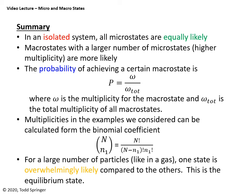So let me try to summarize this lecture. In an isolated system, all microstates are equally likely. So we're familiar now with the terminology of microstates, macrostates and multiplicity. All the microstates are equally likely. That's an assumption. But the macrostates are not equally likely because macrostates that can be achieved with a larger number of microstates or a different number of ways, higher multiplicity, are more likely. The probability of achieving a certain macrostate is the multiplicity of that macrostate omega divided by the total multiplicity. In the examples we did where something could be either on the left or on the right, you could calculate these multiplicities using the binomial coefficient, so using these factorials. And then the claim, the amazing claim, is that if you have a large number of particles like in a gas, 10 to the 23 particles, one of these states is overwhelmingly likely, by far most probable compared to any other state.